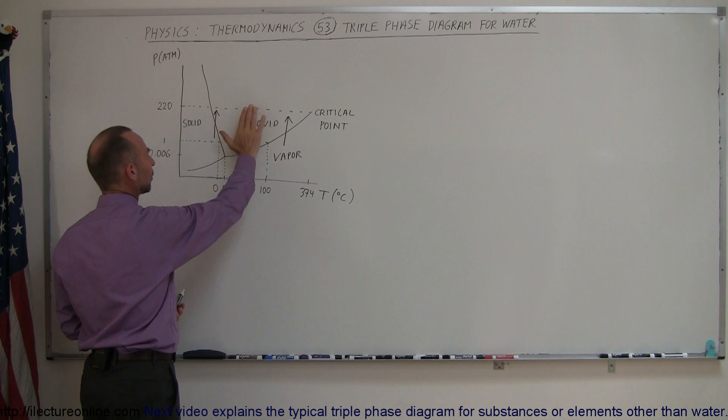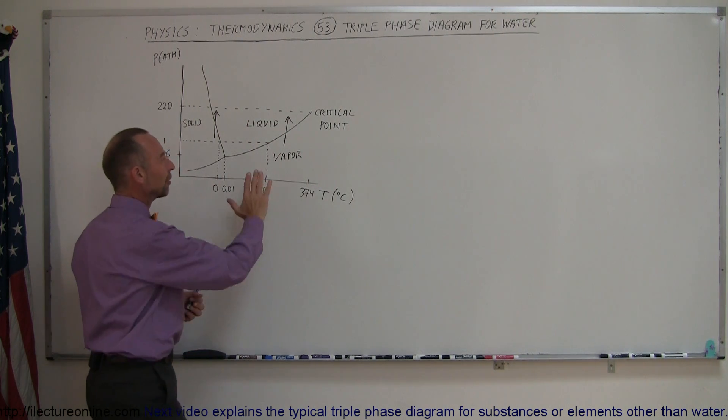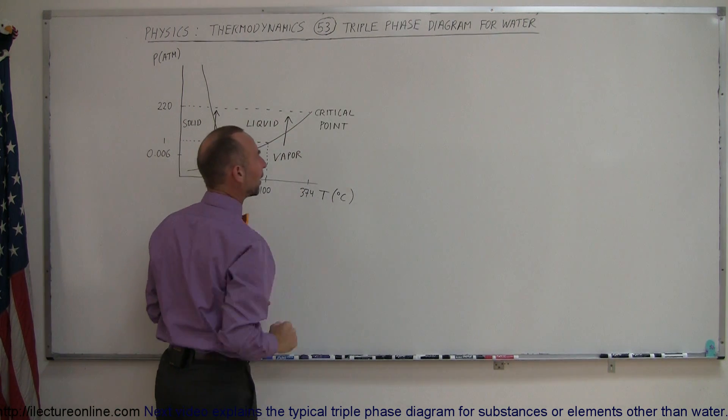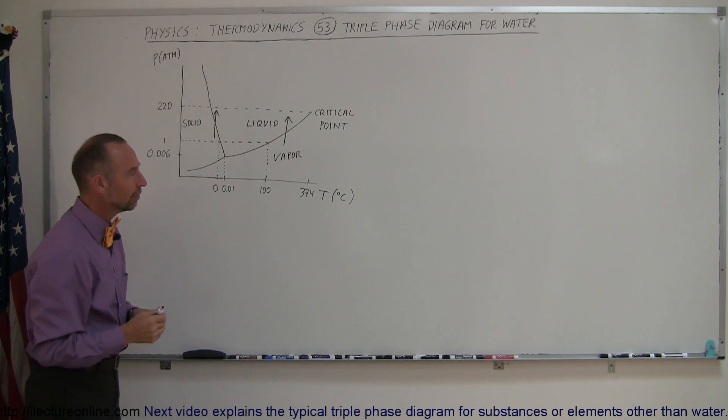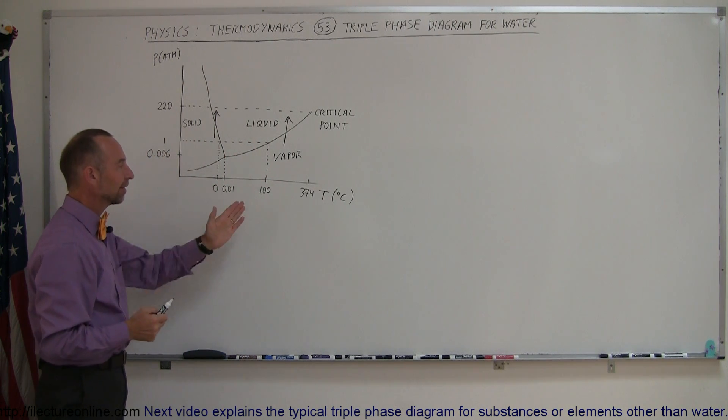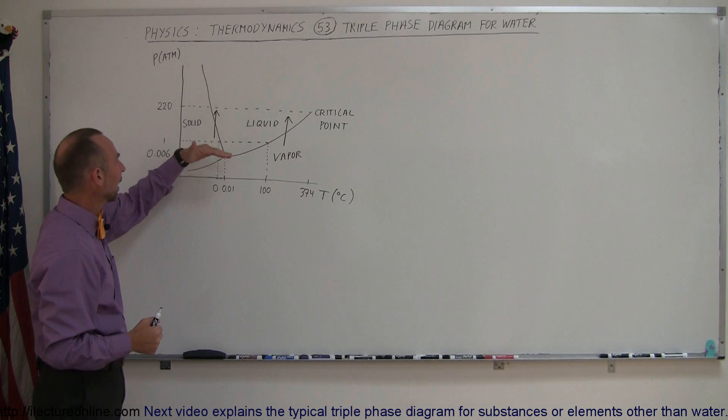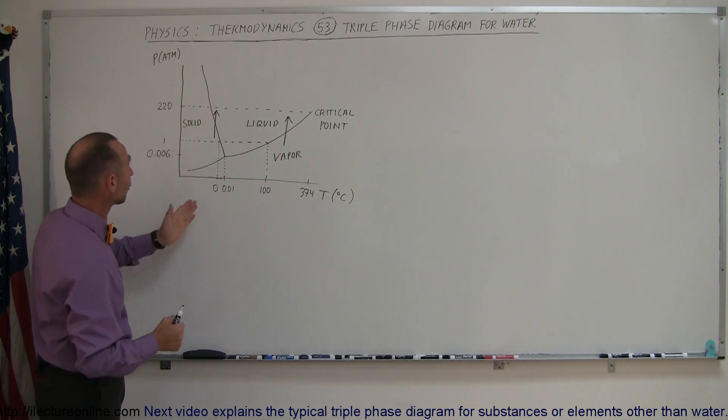We have solid, we have liquid, and we have vapor. Notice that only at very high temperatures water actually becomes a gas. But it's in vapor format when it's less than 374 degrees and below a certain pressure. So on the vertical axis,